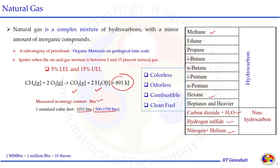Natural gas is colorless and odorless. That is why in our LPG cylinders, an odorant component is added that smells. It is combustible by nature, provides energy, and this combustion process is clean by nature. So natural gas combustion is considered a clean fuel system.